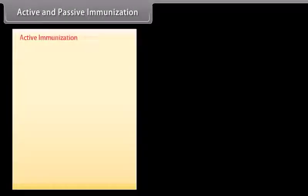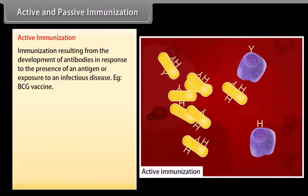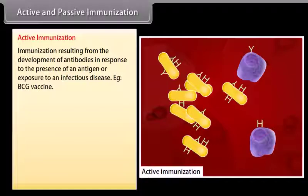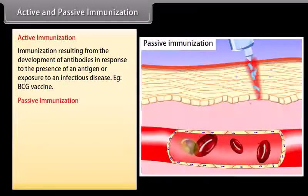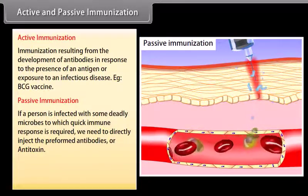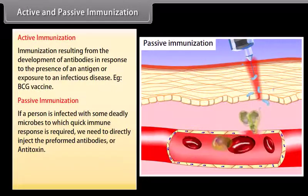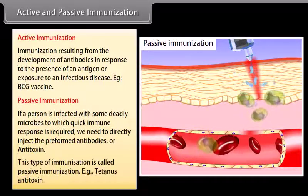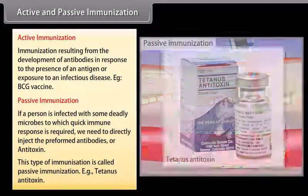Active immunization results from the development of antibodies in response to the presence of an antigen or exposure to an infectious disease. Example: BCG vaccine. Passive immunization involves directly injecting preformed antibodies or antitoxin when a person is infected with deadly microbes requiring a quick immune response. Example: tetanus antitoxin.